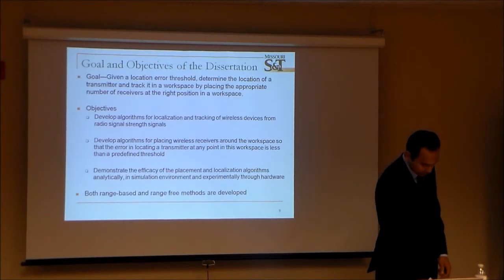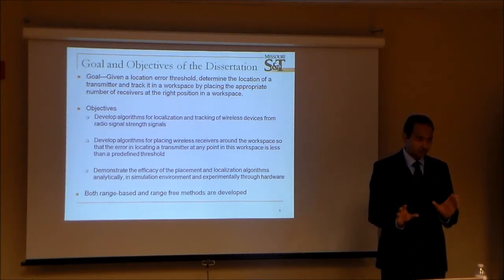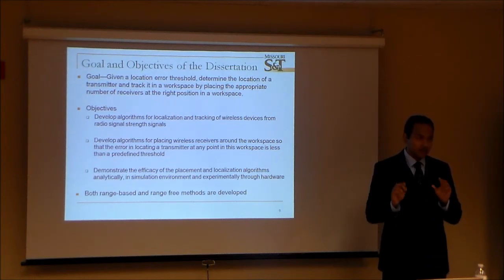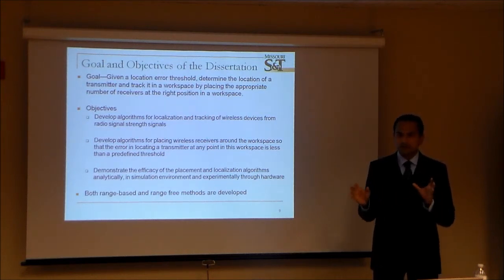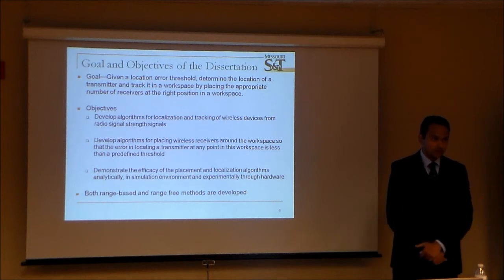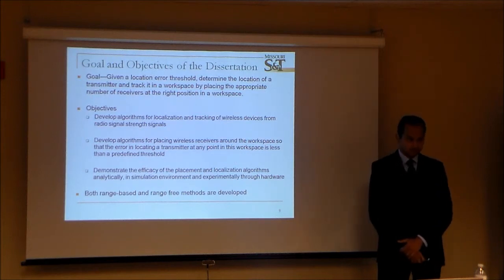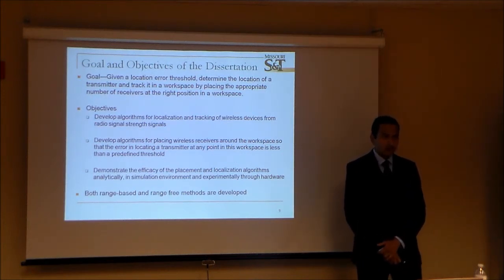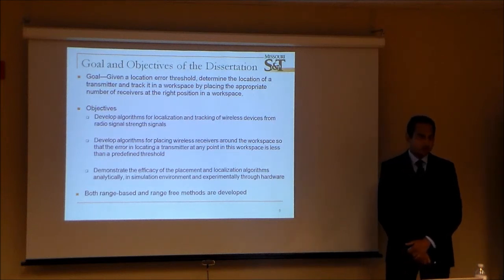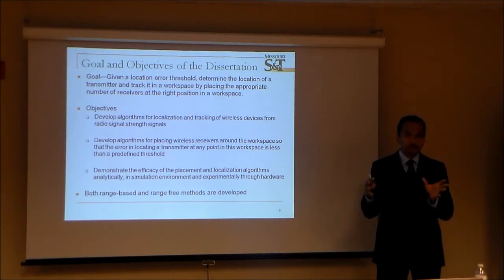By transmitter, I mean an active transmitter transmitting signals — RFID is just one application in one chapter. For most of this work, the transmitter is an active device transmitting a signal and the receiver is also an active device measuring the signals. For example, on a Boeing plant floor, active transmitters are spread around and you want to locate them using receivers placed around the workspace monitoring those signals.